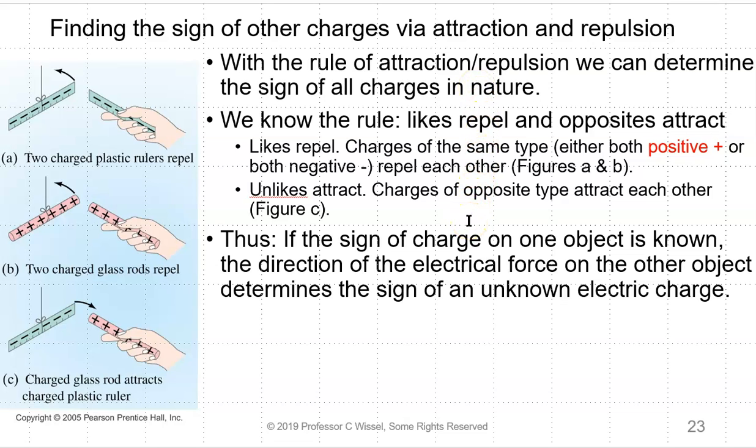Likes repel. Charges the same type, either both positive or both negative, will repel each other. Unlikes attract. Charges of opposite sign attract each other. Thus, if the sign of charge on one object is known, the direction of the electrical force on the other object will determine the sign of the unknown electric charge.